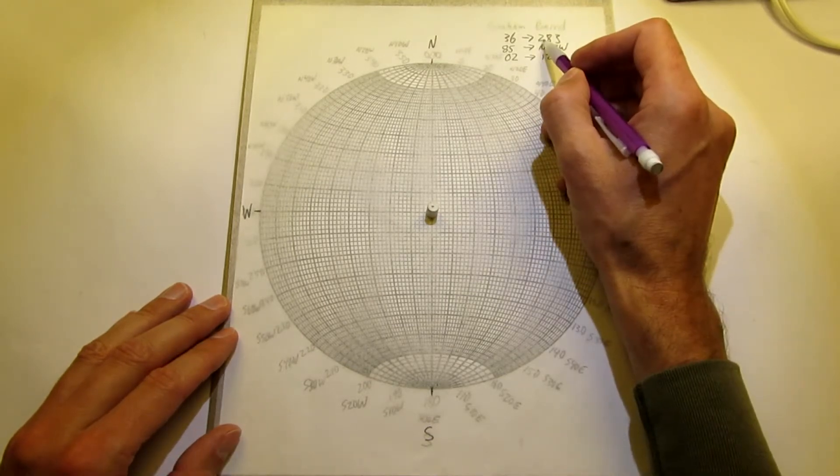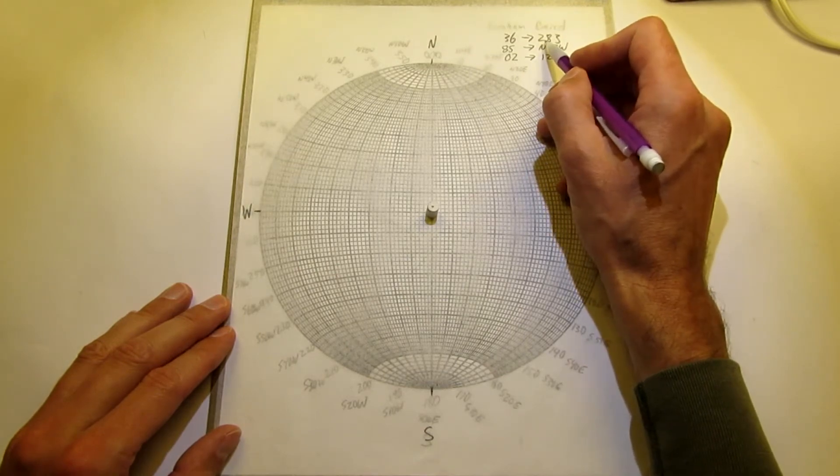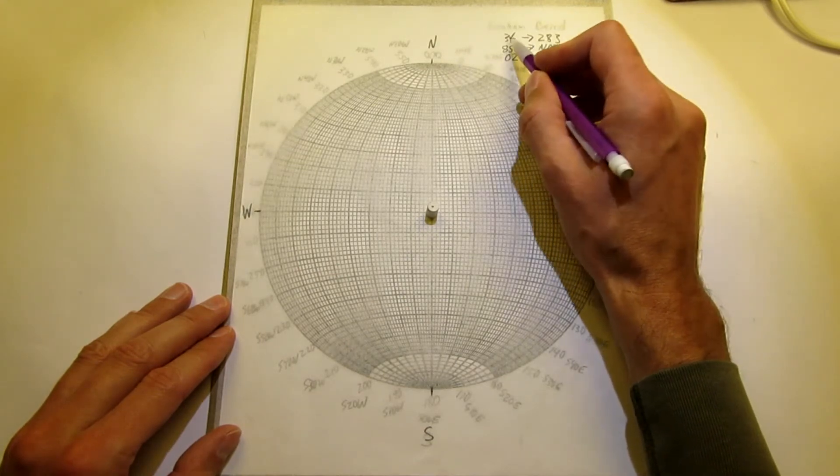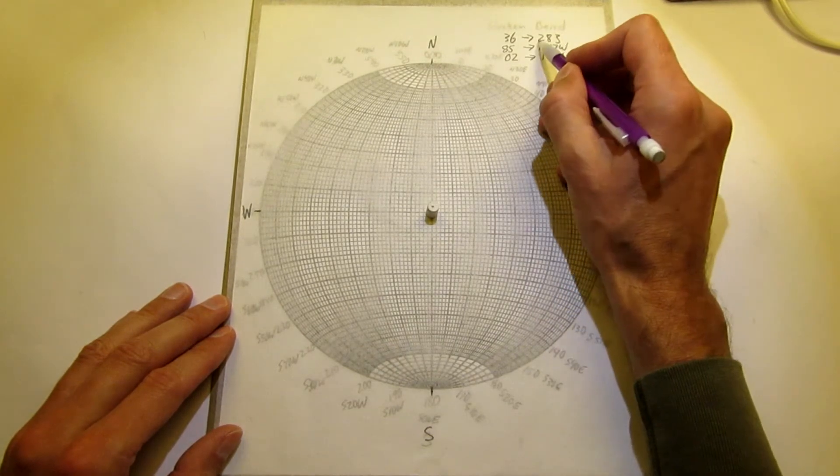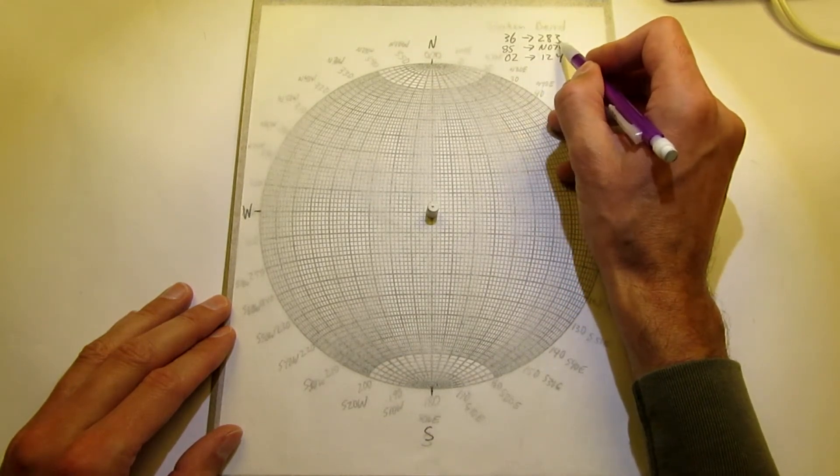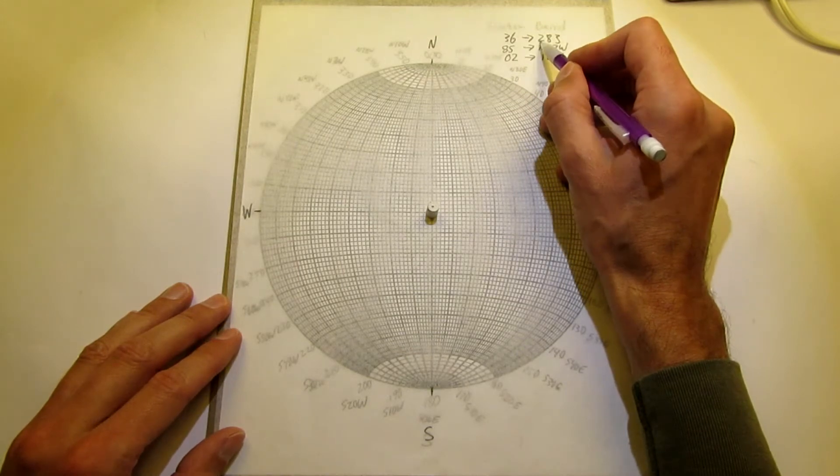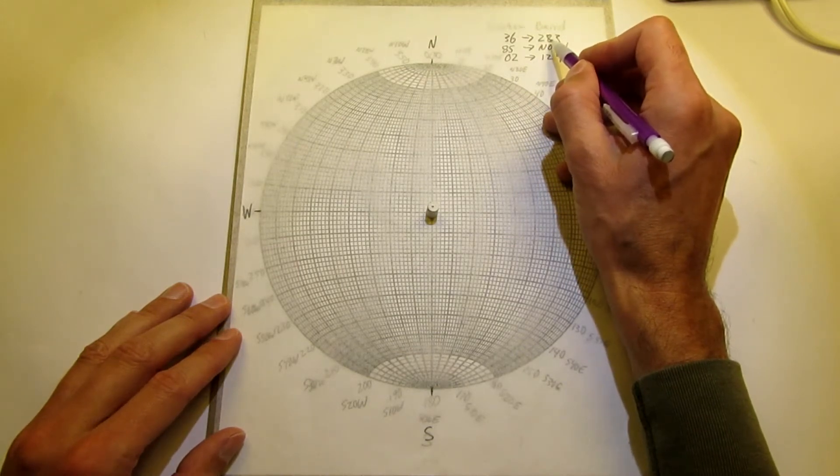We start with, again, we have different words for the measurements for lines. This is going to be the trend or the compass direction. So we start with that, 283.